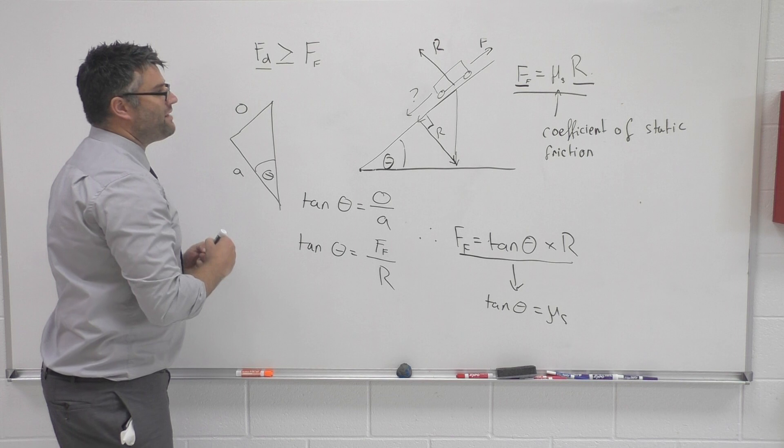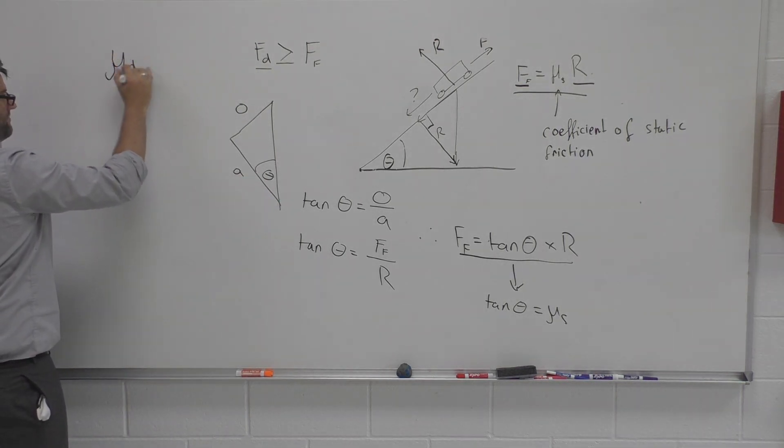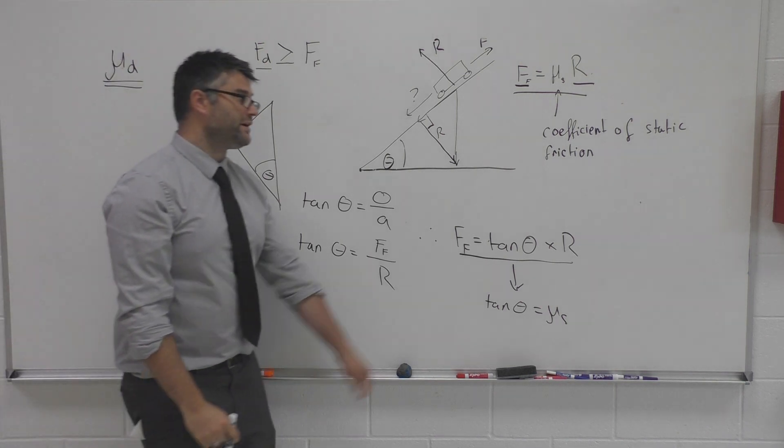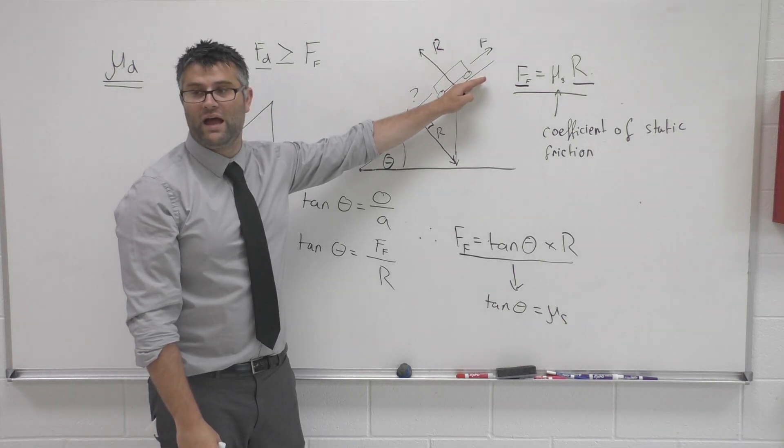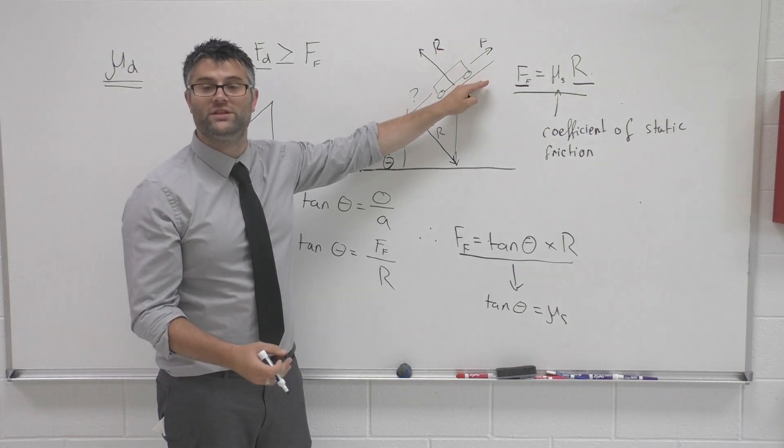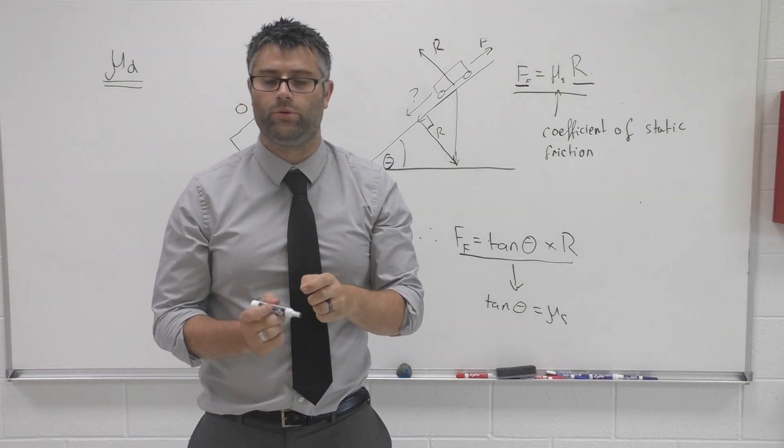So dynamic friction is represented by a letter mu D. And this is basically the friction of an object while it's moving. And that would normally be constant and independent of the velocity. That's a really important point.